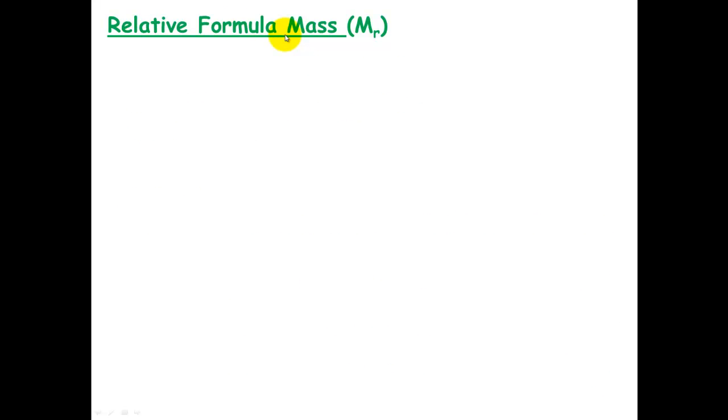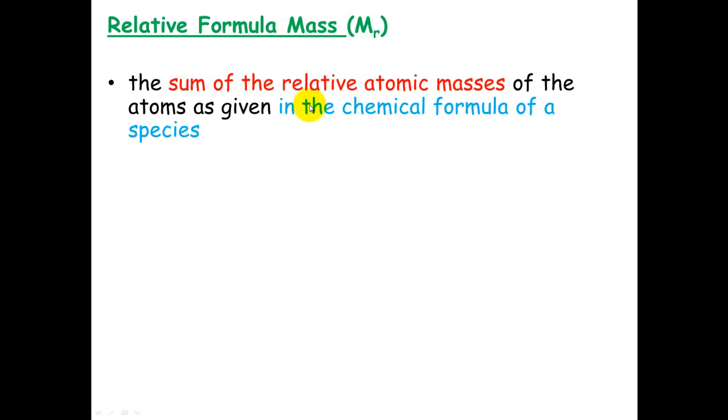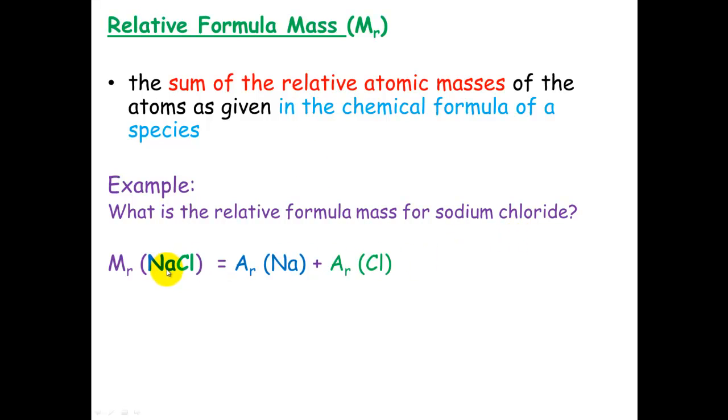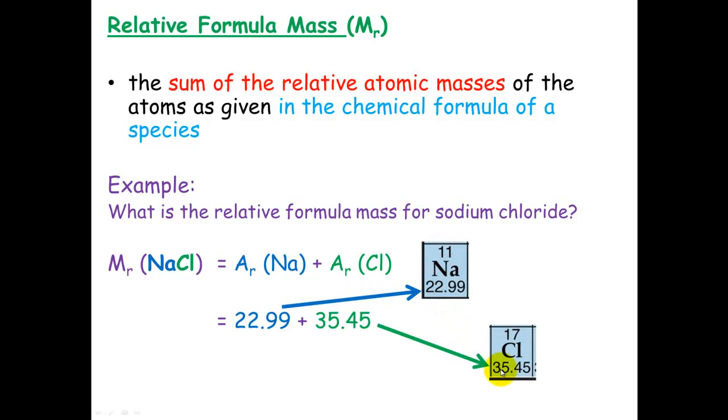Relative formula mass is exactly the same. So it's the sum of the relative atomic masses of those atoms in the chemical formula. For example, what is the relative formula mass of sodium chloride? We have a look at sodium chloride. So it's the relative atomic mass of sodium plus the relative atomic mass of chlorine. So we have a look at the periodic table. We look at their respective mass numbers, and we just pop those into the equation. There's just one of each of those, so we add them together to get a total of 58.44.